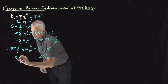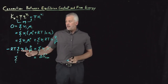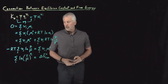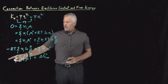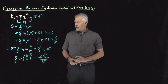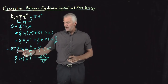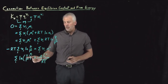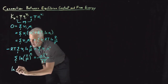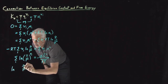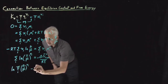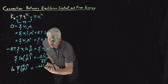On the left side, inside the sum I have a constant times a log, which I can write as log of (Pᵢ/P°) raised to that constant νᵢ. I'll move the RT to the right side as −1/RT. Since the sum of logarithms equals the logarithm of the product, I can rewrite that as the log of the product ∏(Pᵢ/P°)^νᵢ. The right side remains −ΔG°/RT.